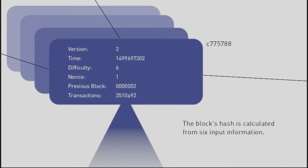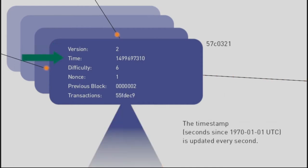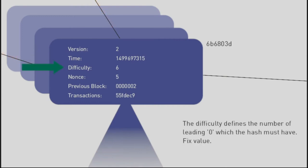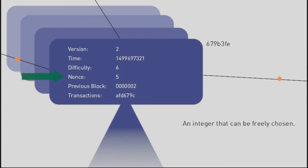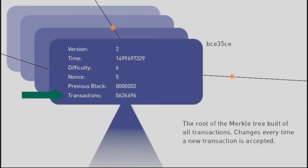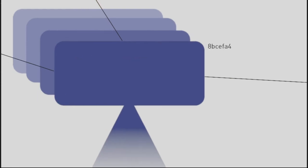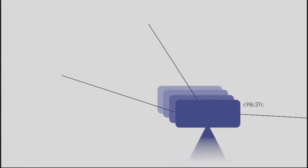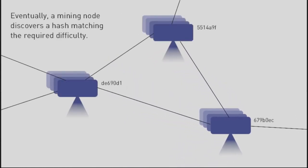The first is the version — in this example it's version two. Then the time, which changes every second. The difficulty — here in this example it's six, though in the real world it's of course much higher. Then the nonce, which is the input that can be freely chosen. Then the previous block reference, which has to match the difficulty, and the transactions in the form of the root of the Merkle tree.